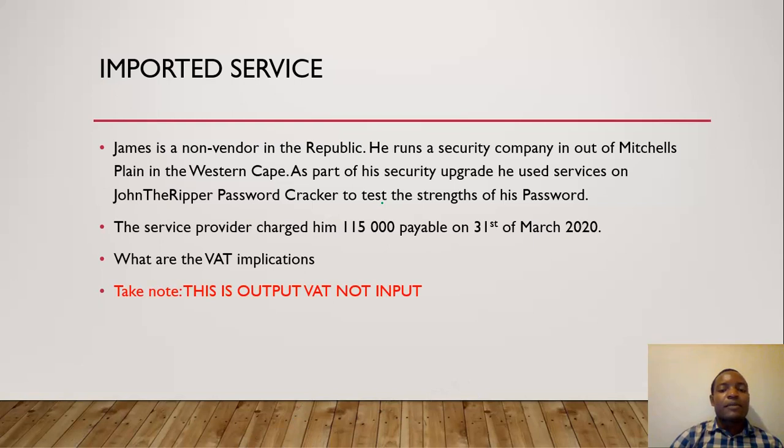Let's attempt a simple example. James is a non-vendor in the Republic. He runs a security company out of Mitchell's Plain in the Western Cape. As part of his security upgrade, he uses the services of John the Ripper. I'm sorry, I like tech stuff. John the Ripper is something that is used to create passwords or to test password strength. So to test strength of his password, the service provider charged him $115,000 payable on the 31st of March 2020. What are the VAT implications?